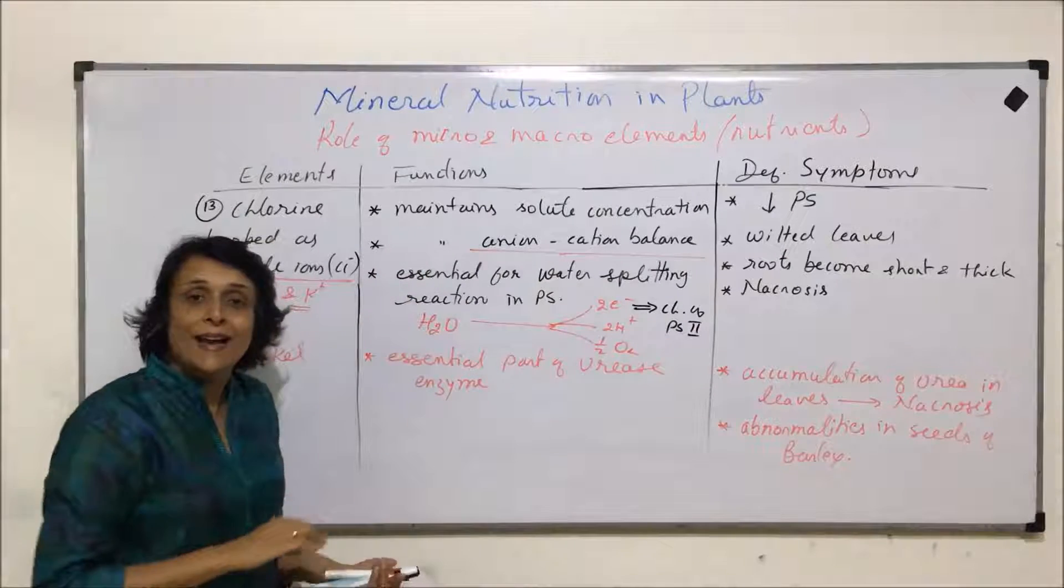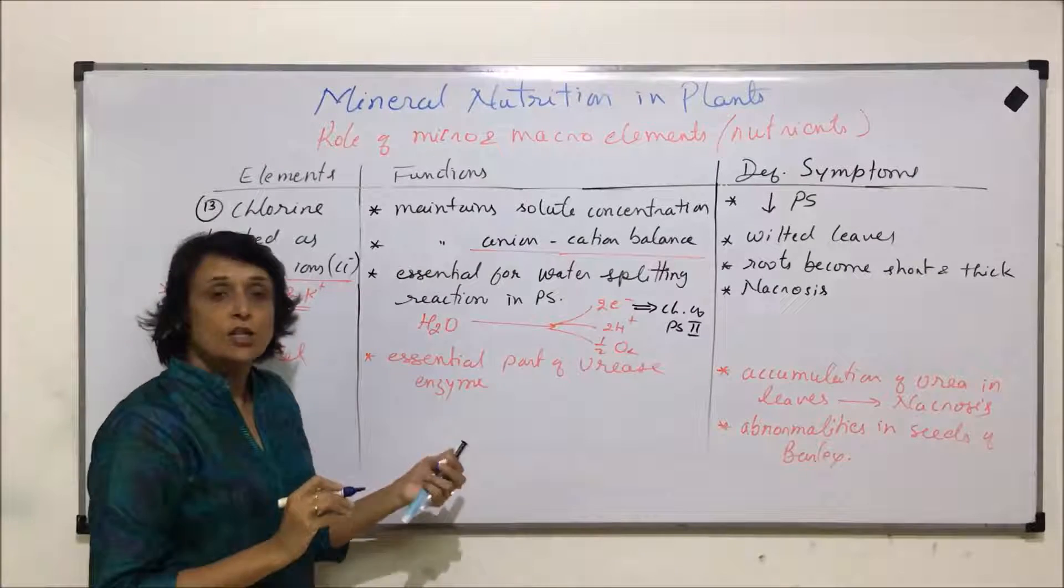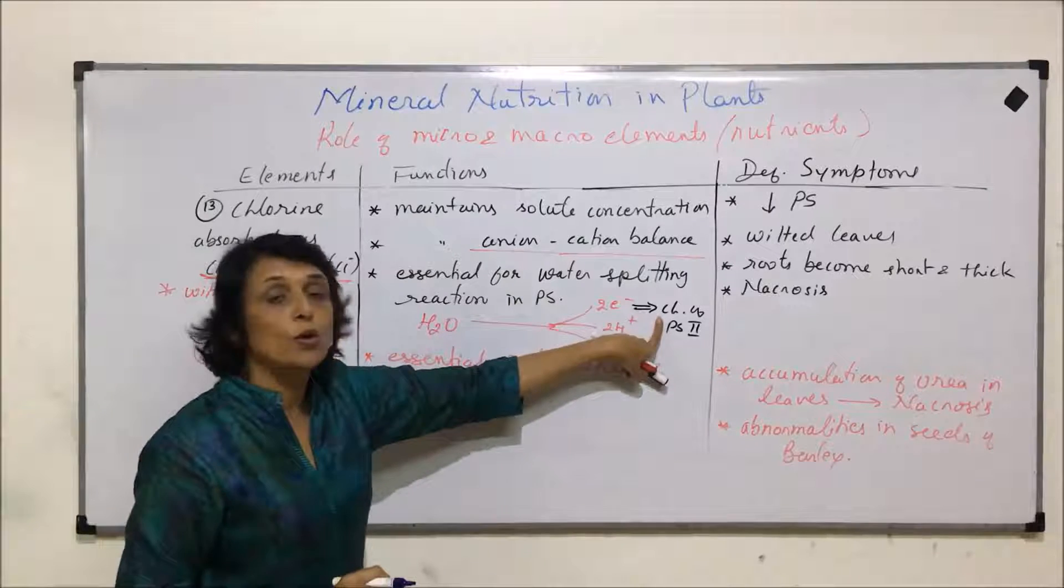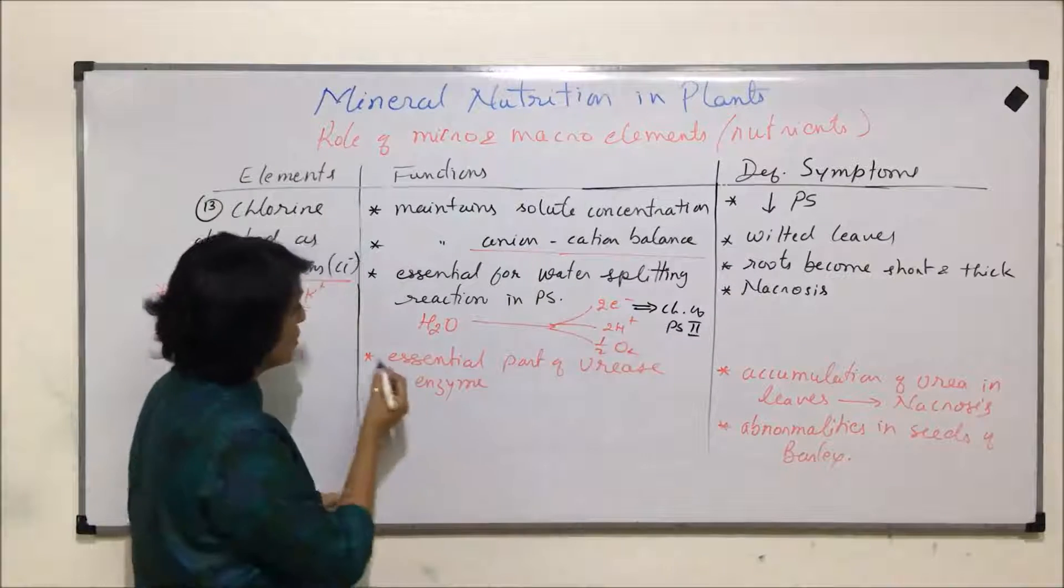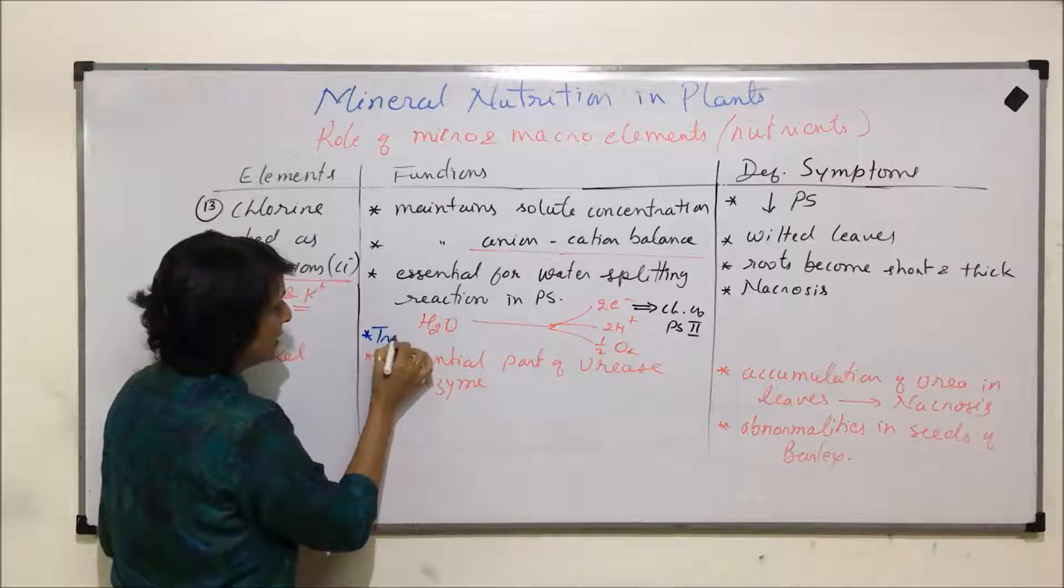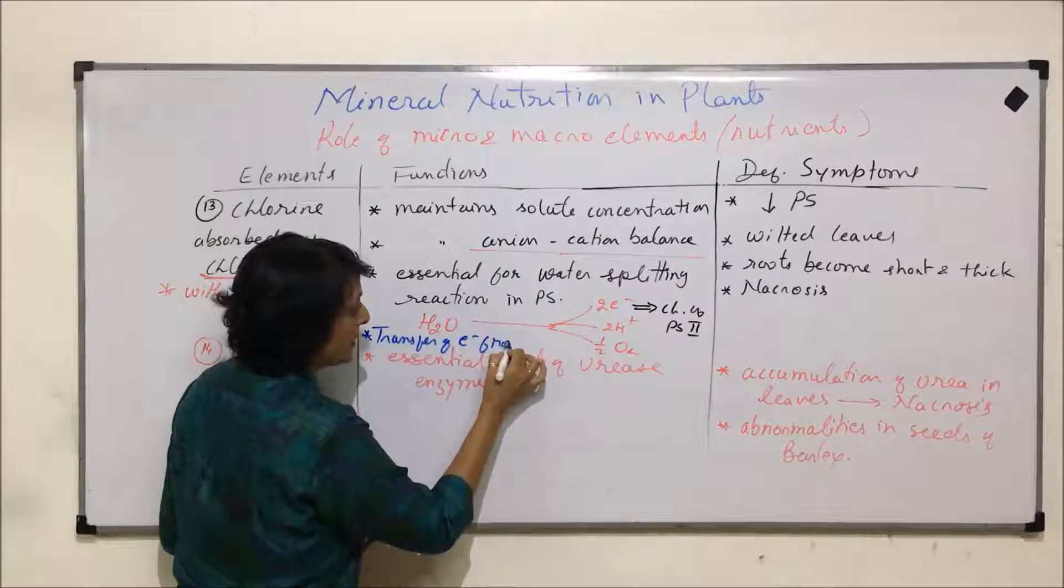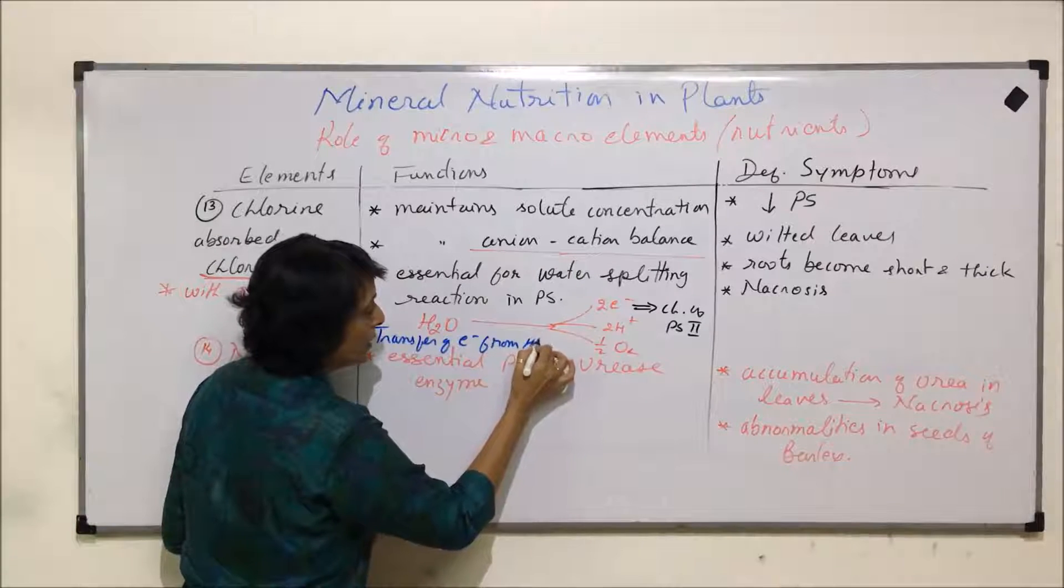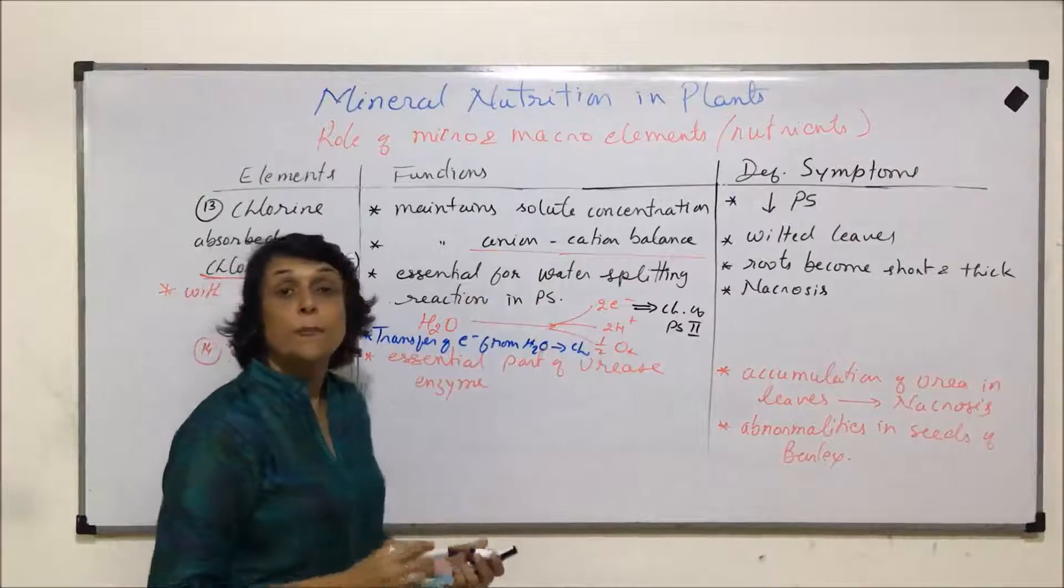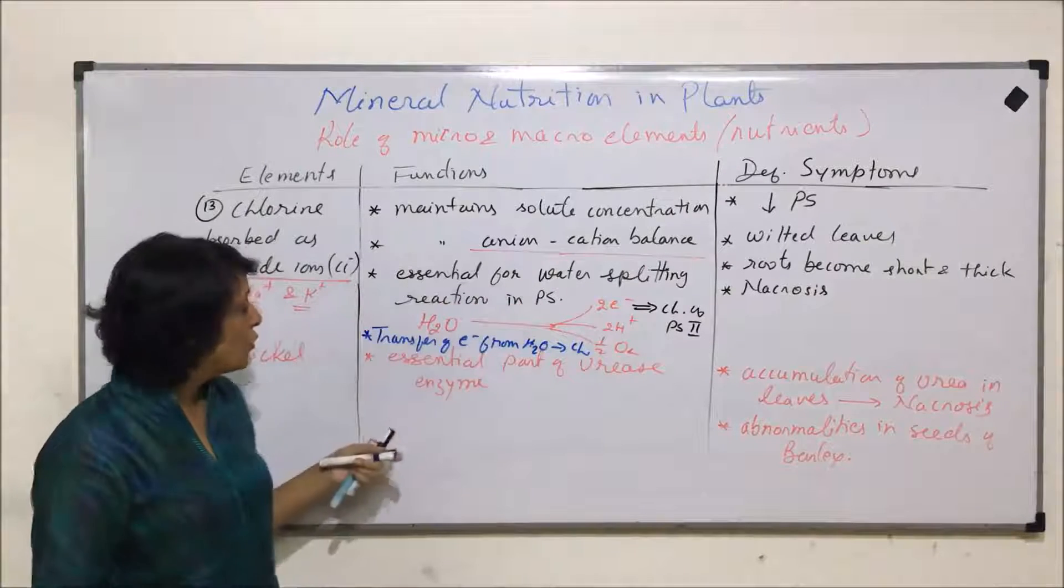What is the role of chloride ion here? The role of chloride ion is transfer of electron from water to the chlorophyll of PS2. We can write it here as helps in transfer of electron from water to chlorophyll of PS2, and that is where chloride ions play very important role.